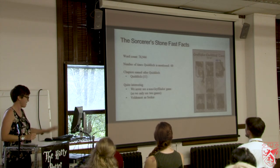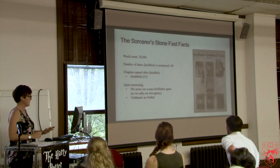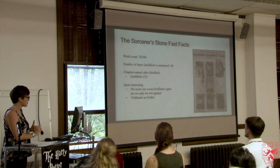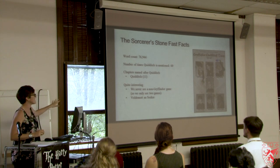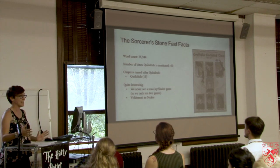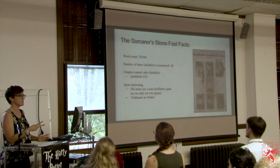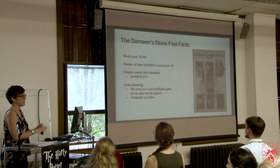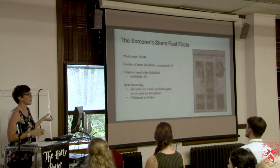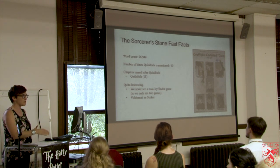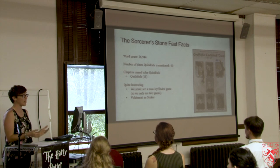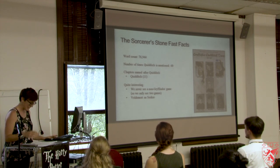Sorcerer's Stone fast facts: Quidditch is mentioned 60 times. There's one chapter named after Quidditch. We never see a non-Gryffindor game, so we only see two games — that happens in the majority of books. Harry is only a spectator twice in the whole series besides the Quidditch World Cup. And this is the first instance we see of Voldemort as a kind of Seeker — always going after objects: the Philosopher's Stone, the Elder Wand, the Prophecy, and Harry himself. He's the biggest Seeker in the book besides Harry.